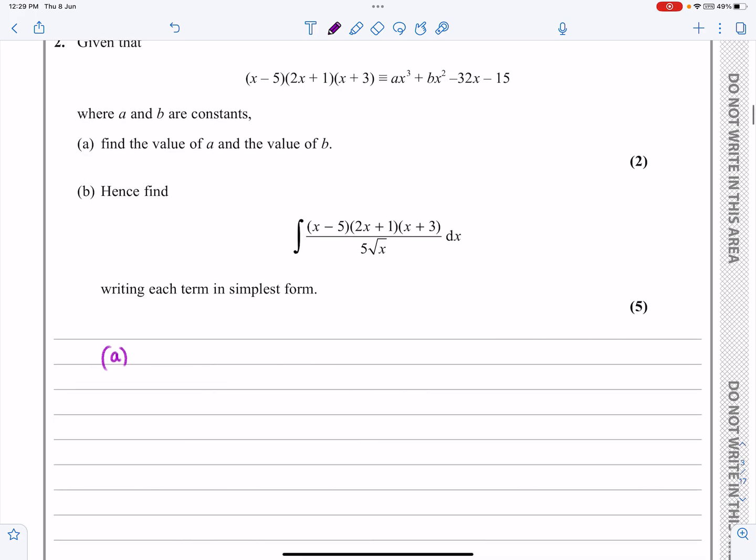Part A is saying, can I show that this left-hand side here is identical to that, and basically can I work out what a and b are going to be? Absolutely. I'm going to multiply out (x - 5)(2x + 1)(x + 3), and then it will come to some cubic and look very similar to the right-hand side. When I'm doing this, I've got a choice here. I can do (x - 5) multiplied by all of that bit, or I can multiply out those two first and then subsequently multiply them by (x + 3). Neither way is any quicker than the other with this one.